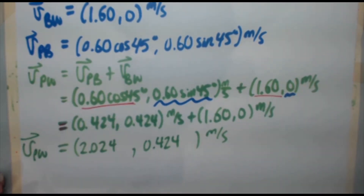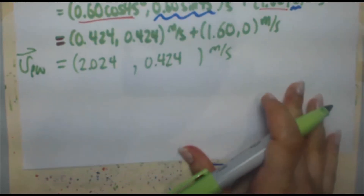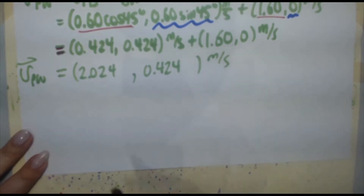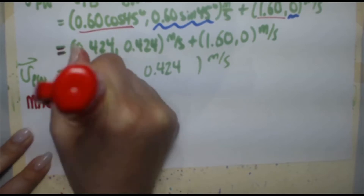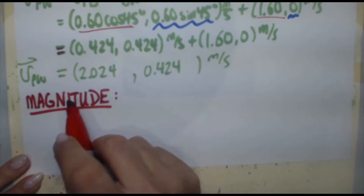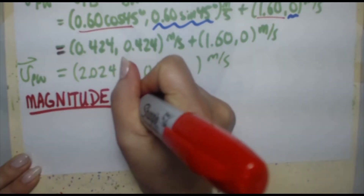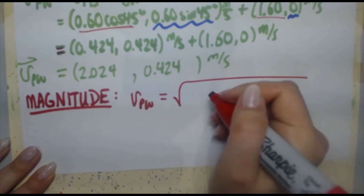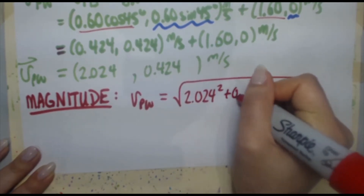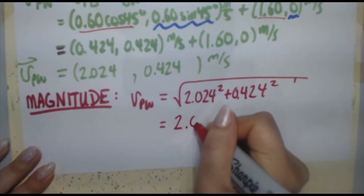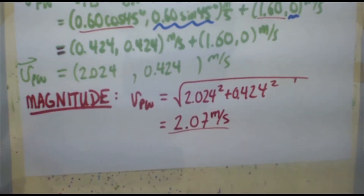This is not our final answer because we need to express the velocity as a magnitude and direction. For the magnitude, we take the square root of the sum of squares of the components. So the magnitude of V-P-W equals the square root of 2.024 squared plus 0.424 squared, which gives 2.07 meters per second.